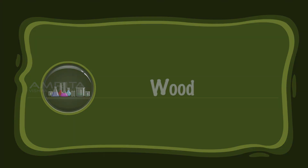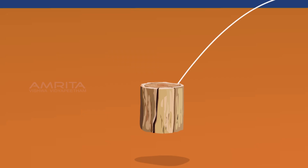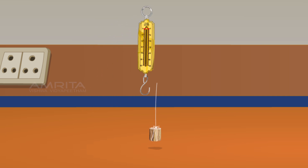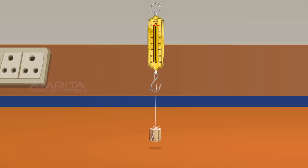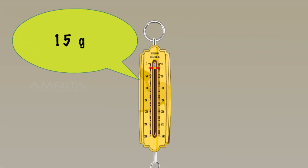Wood. Use a spring balance, a block of wood, and a piece of twine. Tie the wood using the twine. Now, weigh the wood using the spring balance by looping the free end of the twine to the spring balance and suspending it vertically. The mass of the wood is 15 grams.